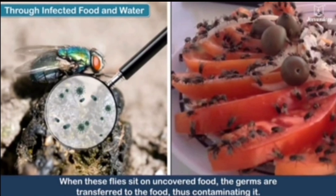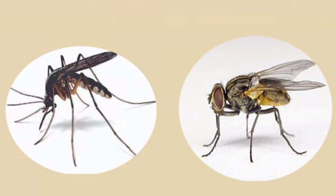Some insects like the housefly carry disease-causing germs on their feet. They sit on filthy garbage in order to get food, and germs stick to their feet from the garbage. When the same housefly sits on food or clothing, the germs are likely to reach there. Mosquitoes and houseflies are the most common vectors.